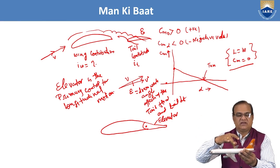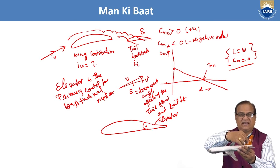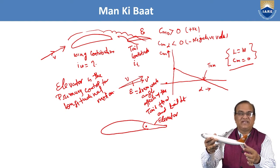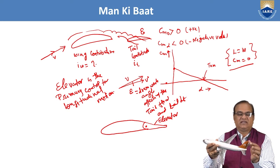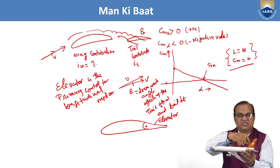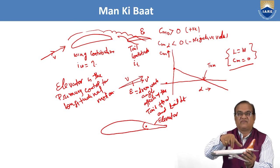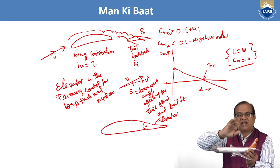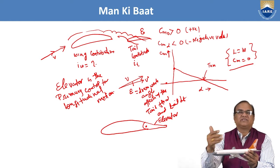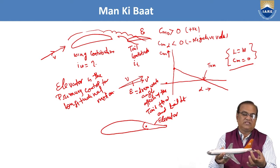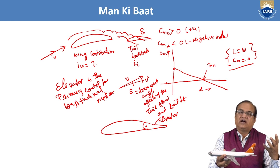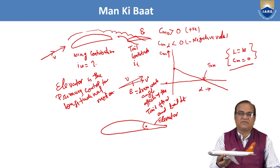Here is the aircraft: this is the fuselage, this is the wing, this is the horizontal tail, and this is the vertical tail or vertical fin. The elevators are fitted at the trailing edge of the horizontal tail. The distance LT between the aerodynamic center of the horizontal tail and the center of gravity is very important, as the tail is trying to rotate the aircraft about the center of gravity.